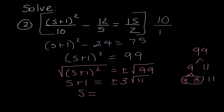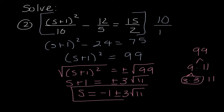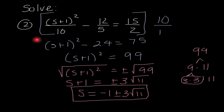I get s equals negative 1 plus or minus 3 radical 11. So once again, if I have fractions I multiply by the LCD to get rid of them. If I have a term squared and just constants, I solve by square rooting — I think it's the easiest way to go about a problem like this.